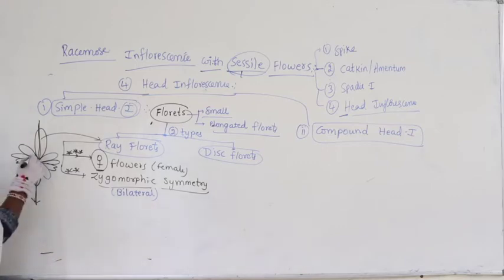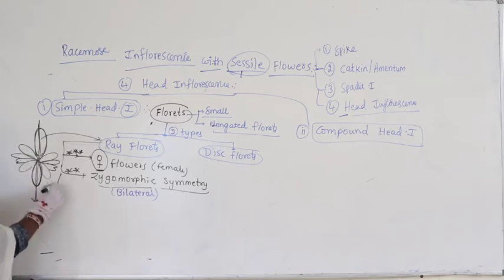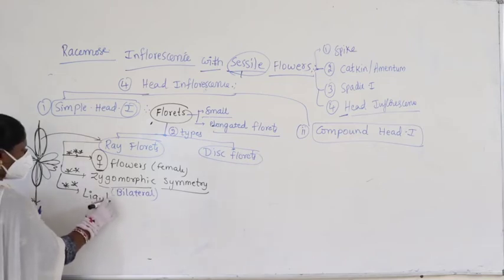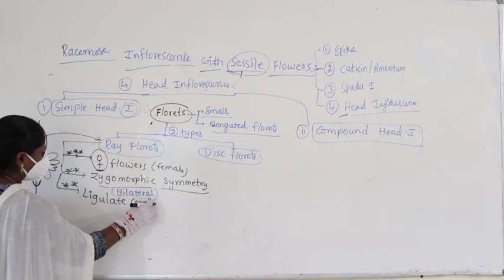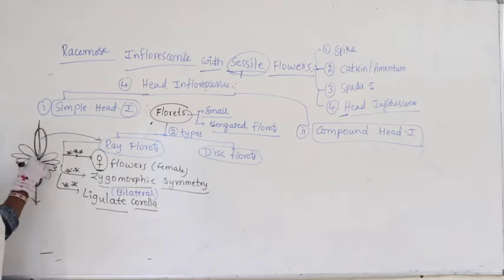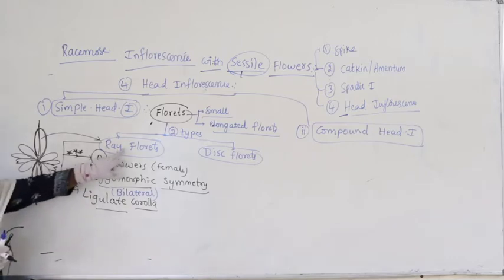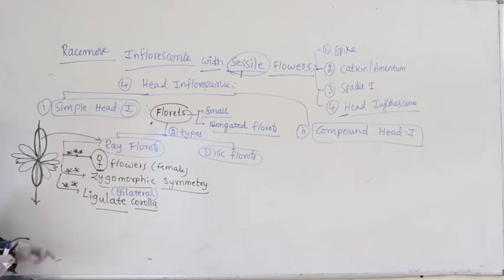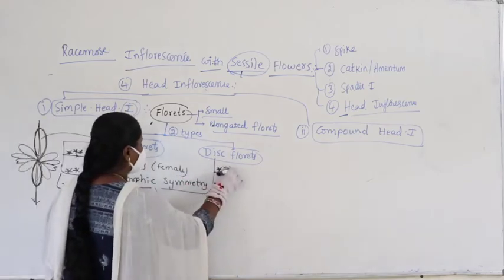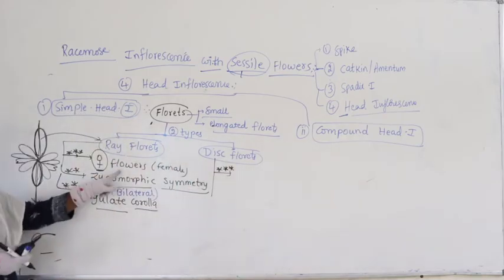The shape of the ray floret, if you look at it, is called ligulate corolla. Ligulate corolla means somewhat like a tongue-shaped corolla. Such type of arrangement we find for ray florets. Ray florets are always female flowers — this is very, very important to remember.